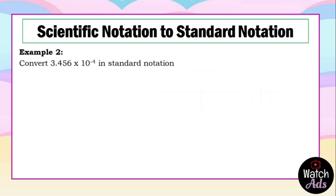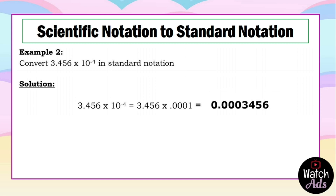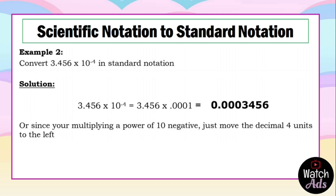Let's convert 3.456 × 10⁻⁴ to standard notation. We expand 10⁻⁴ = 1/10,000. Our final answer is 0.0003456. Alternatively, since the exponent is negative, we move the decimal point 4 places to the left, affixing zeros for empty slots. That is our final answer.